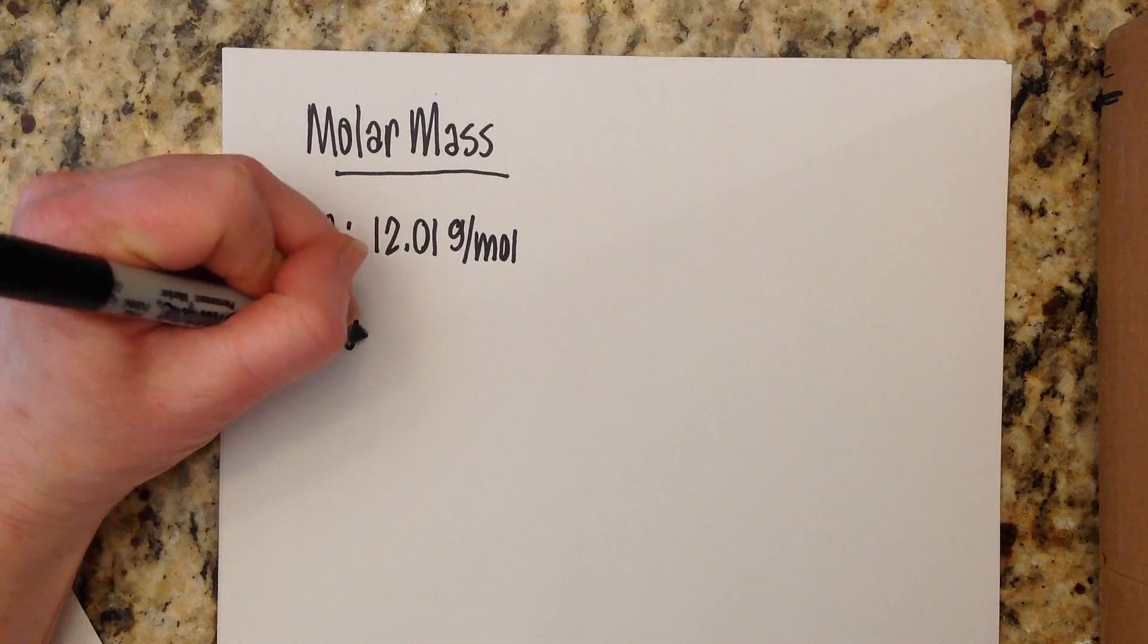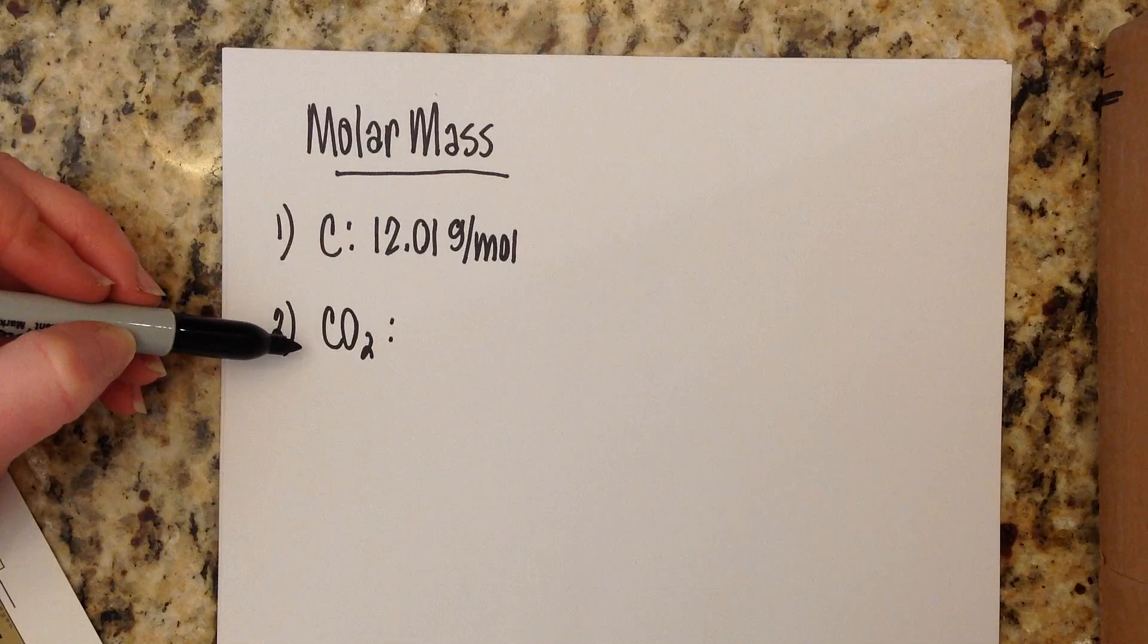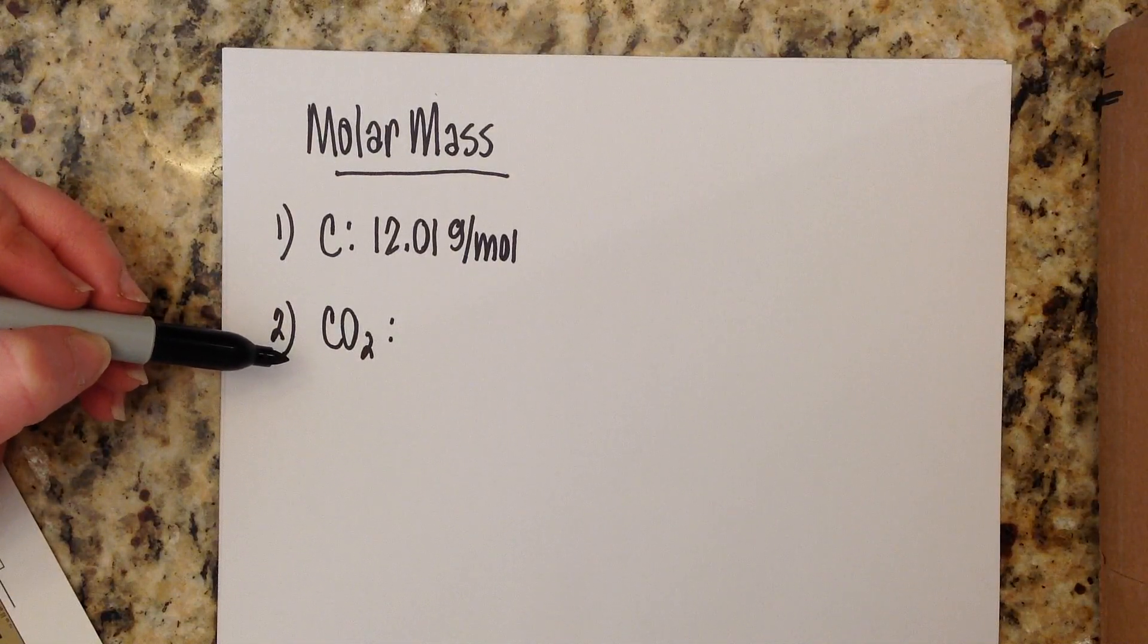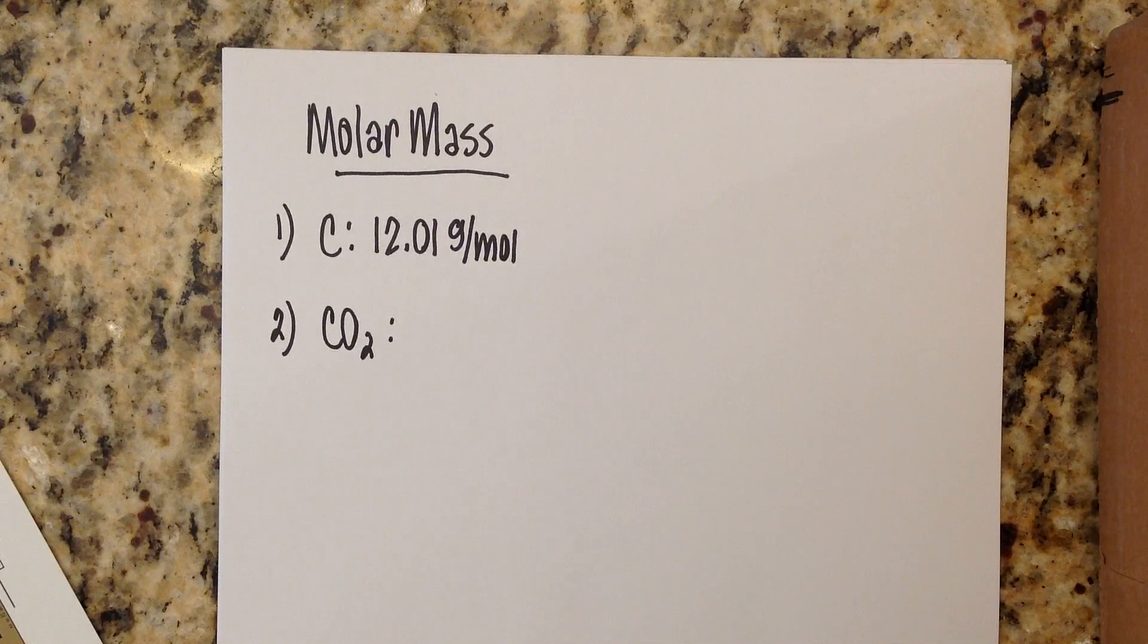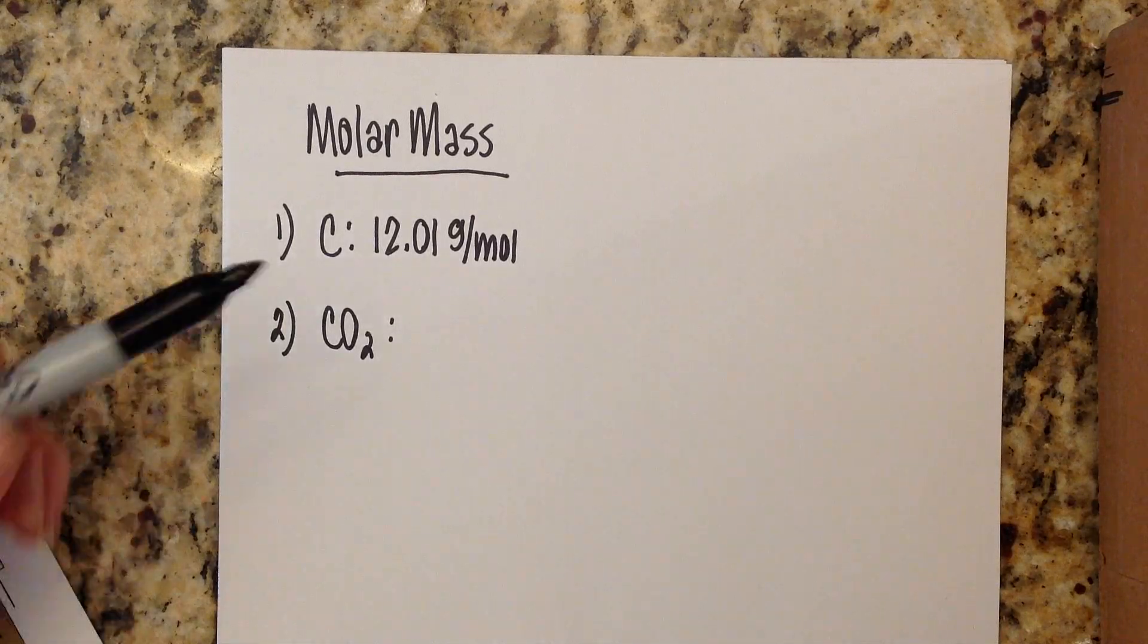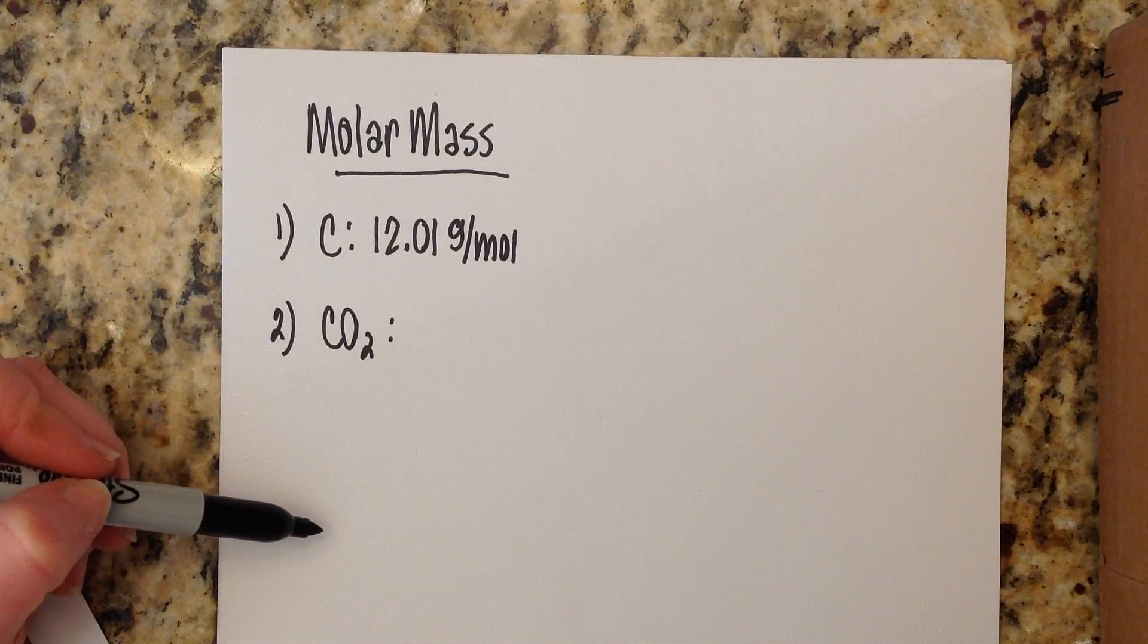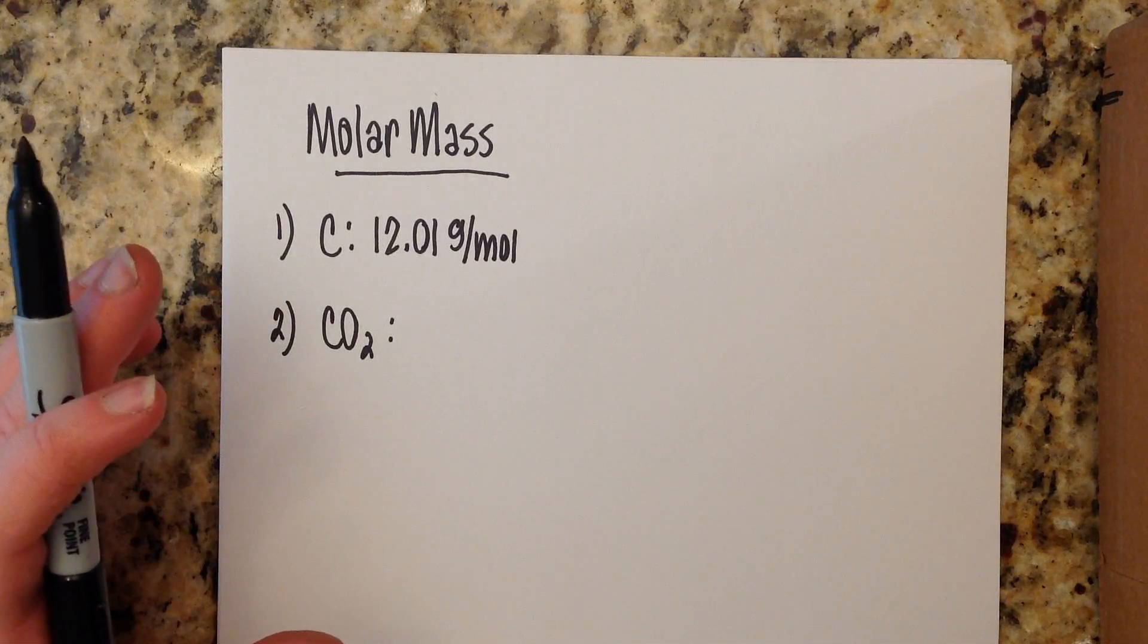Now let's say that you didn't just have carbon. Let's say you needed the molar mass for carbon dioxide. The difference here is that carbon is an element but carbon dioxide is a molecule. What that means is you have more than one element that has come together to make something larger - a molecule, it could be a formula unit, ionic compound, something like that. In this case, it's covalently bonded and it's a molecule. You have to take into consideration that you have one carbon and you have two oxygens involved.